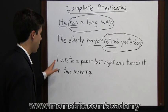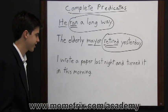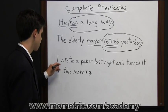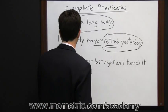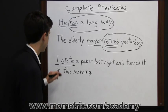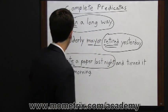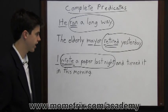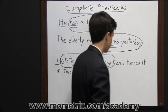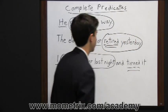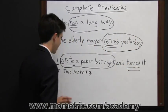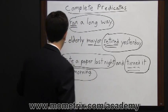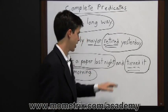The last example says 'I wrote a paper last night and turned it in this morning.' The sentence looks complicated, but it's actually pretty easy. 'I' is the subject, and 'wrote' is the verb, so 'wrote a paper last night' is the complete predicate. 'And' is a conjunction that joins two parts of the sentence. Right after 'and' there's another verb — 'turned' — so 'turned it in this morning' is also a complete predicate.